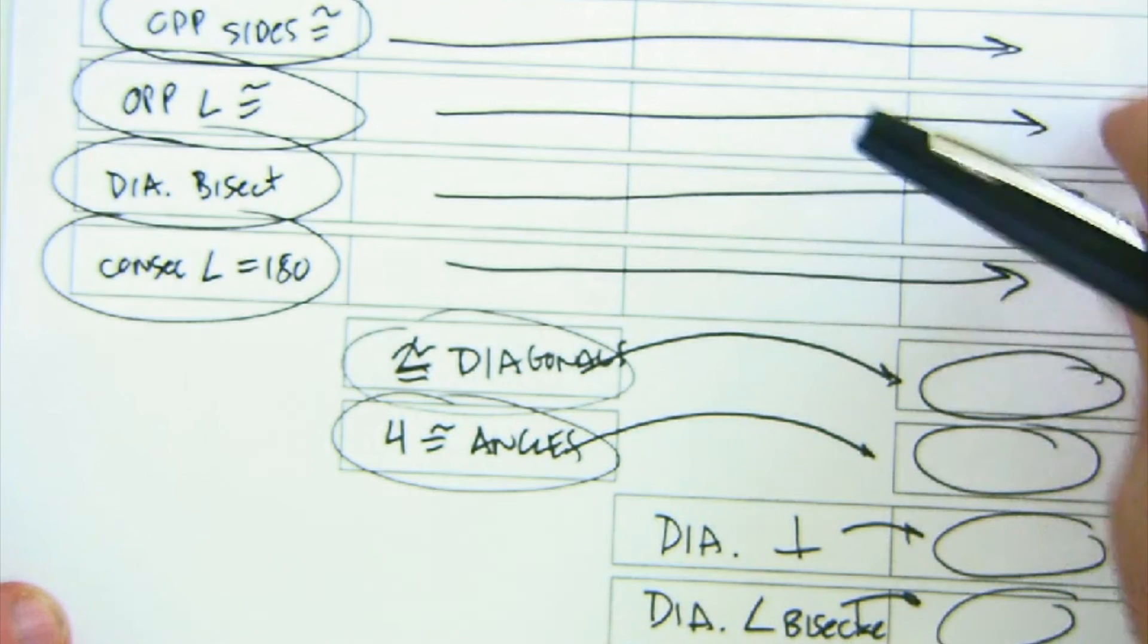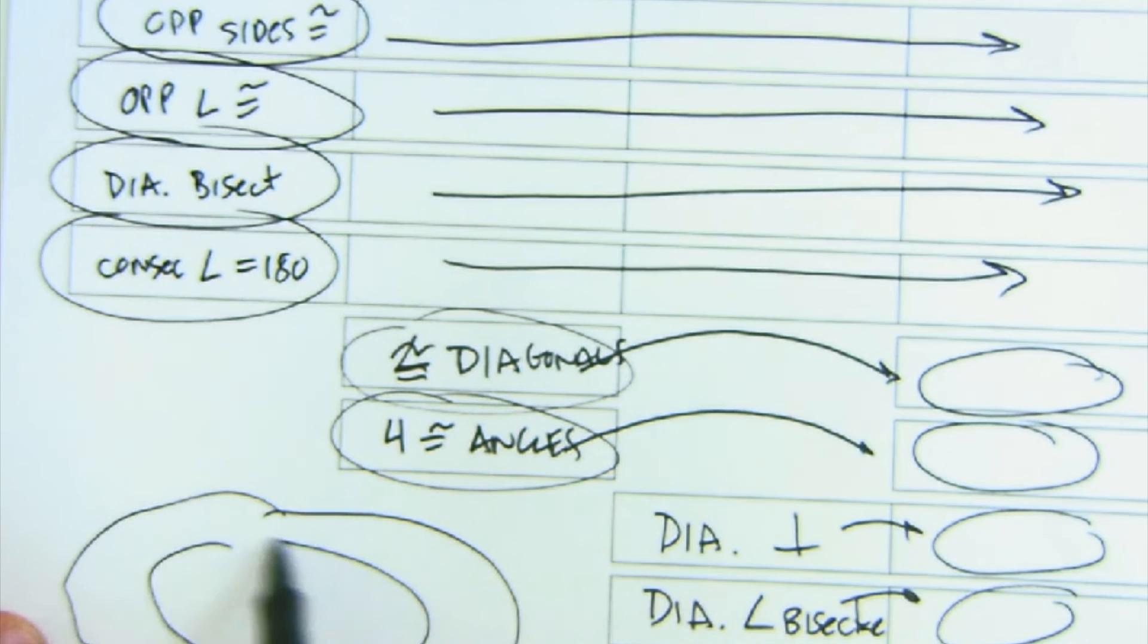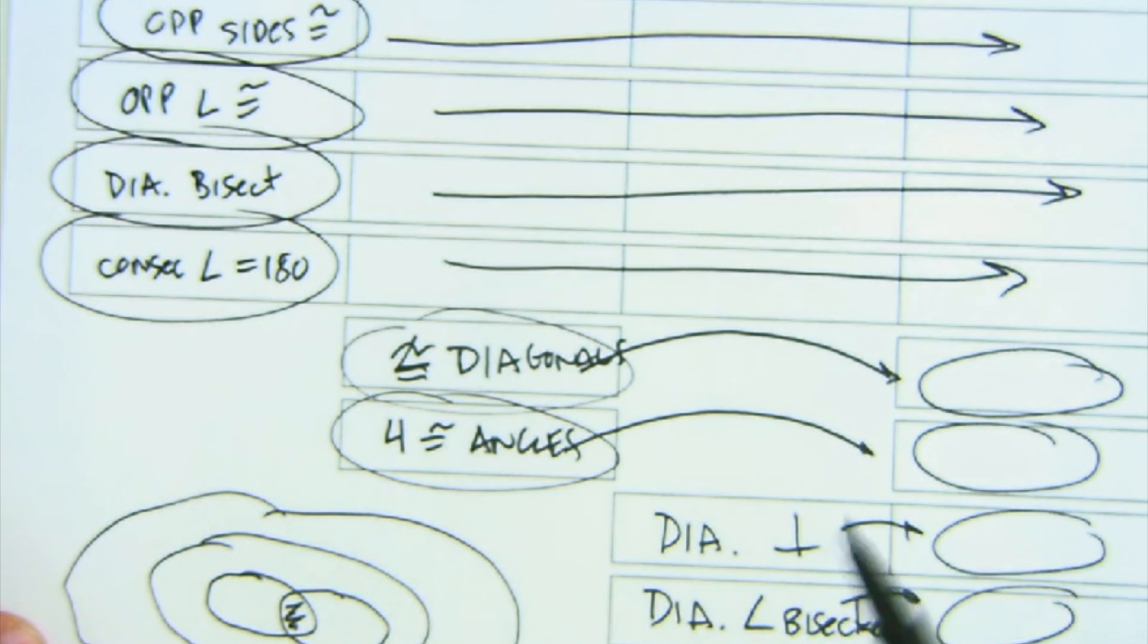That's why the Venn diagram of parallelogram and then rhombus and rectangle and square makes sense, because inside this circle, if it's the parallelogram circle, all of those four properties exist for everybody.